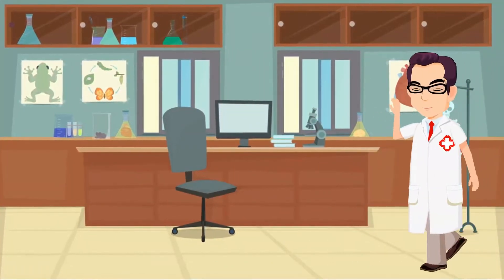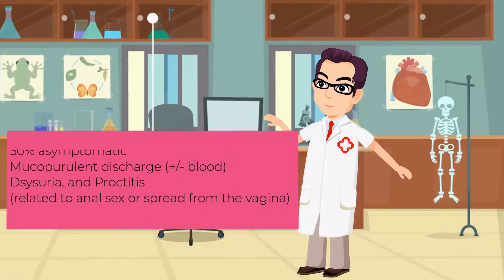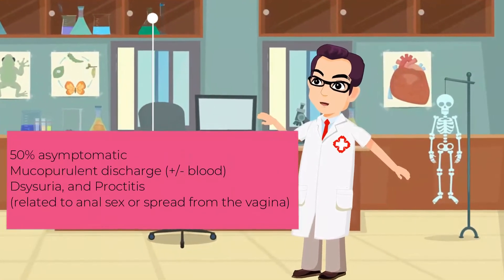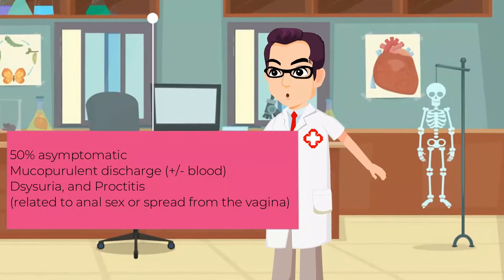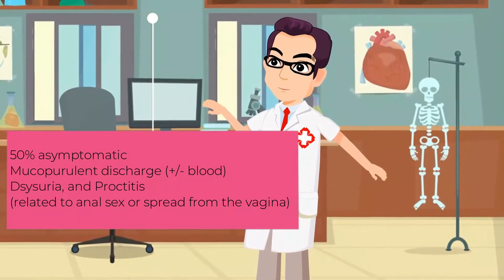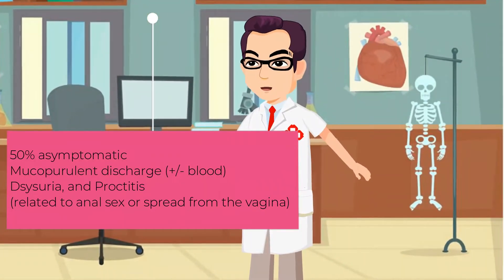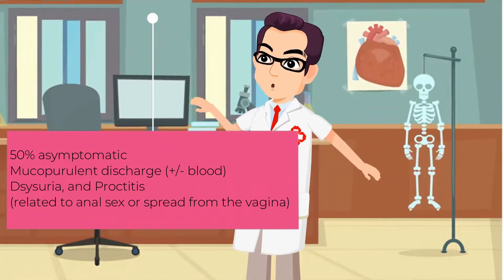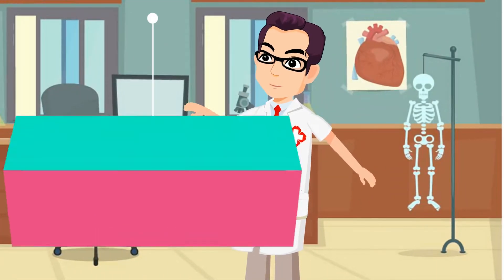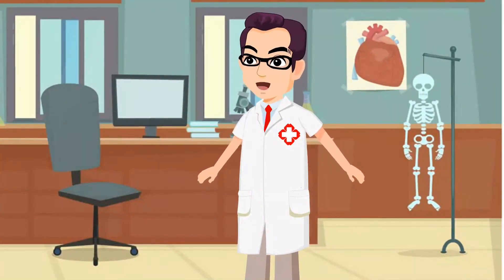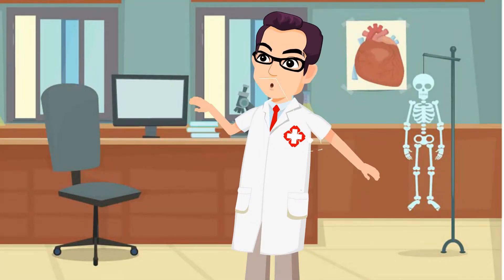In women, half of the cases tend to be asymptomatic. However, it may present with a mucopurulent discharge that may or may not have blood. Other symptoms include dysuria and proctitis, which is related to either anal sex or spread from the vagina. Pharyngeal infections in both genders tend to be asymptomatic.